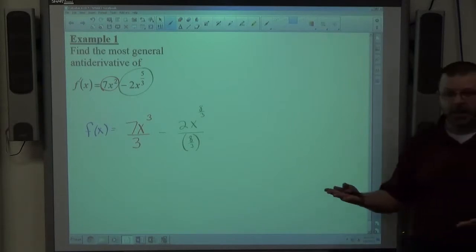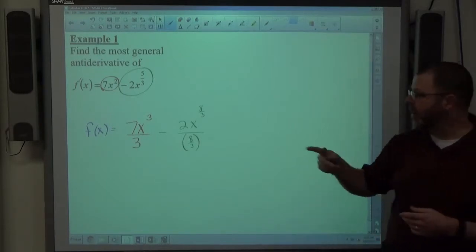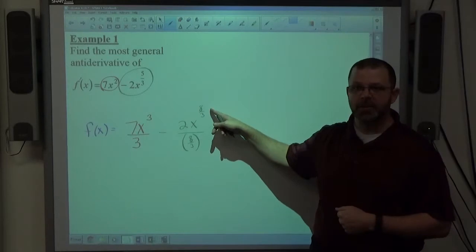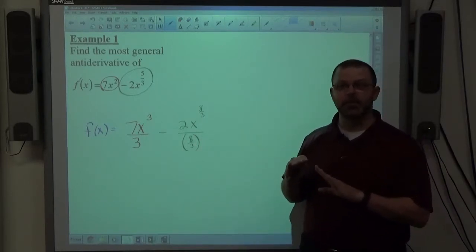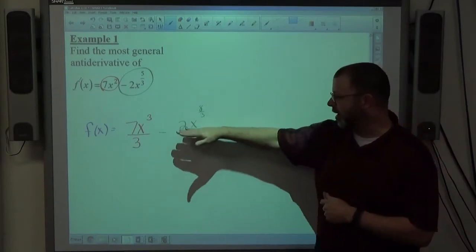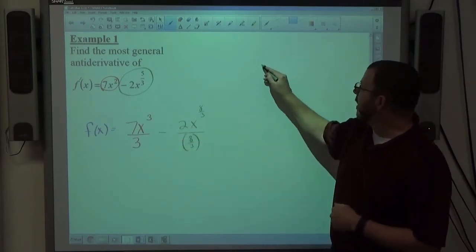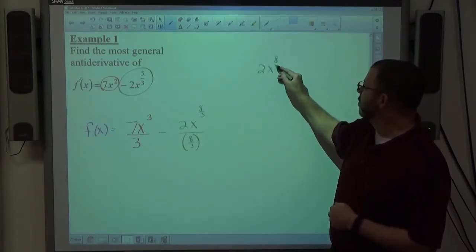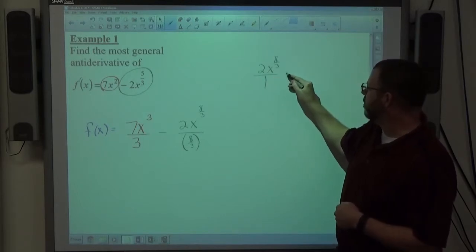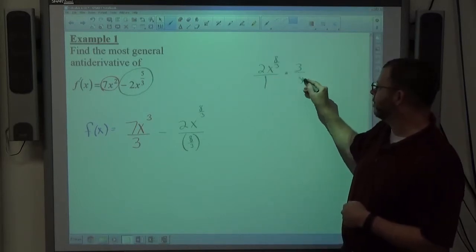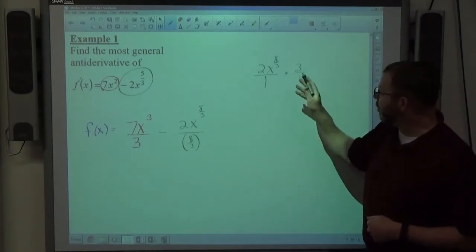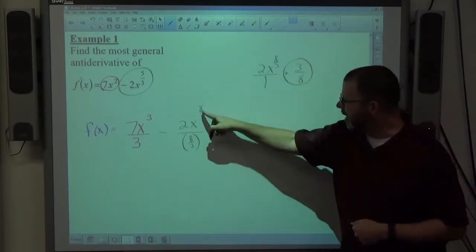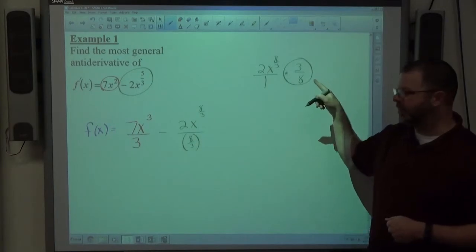That happens a lot, where you have a fractional power and you're going to have to add one to the fraction. If you're getting a new fractional power, you have to divide by a fraction. So I want to streamline that a little bit. Let's just take a look at that 2x to the 8 thirds, which is officially over 1, being multiplied then by 3 eighths.